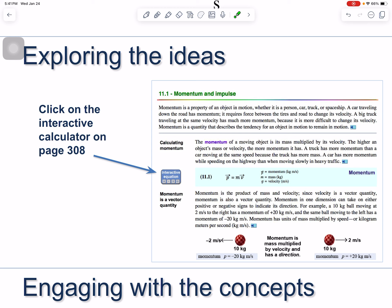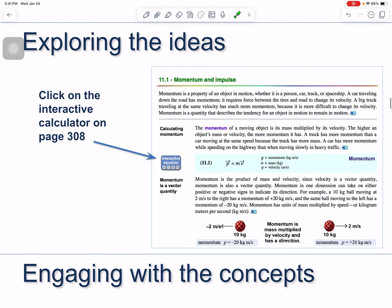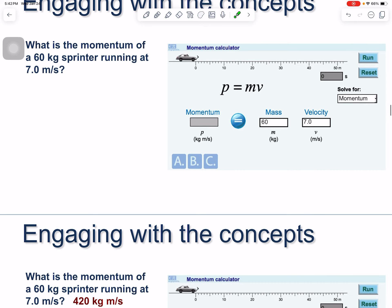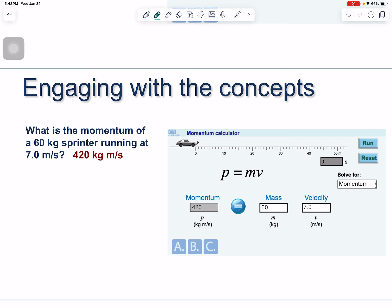There is an interactive calculator on page 308 for doing the next set of exercises, but I strongly recommend using your own calculator since you'll need it for quizzes. What is the momentum of a 60-kilogram sprinter running at 7 meters per second? Using p = mv: 60 kilograms times 7 meters per second gives 420 kilogram meters per second.